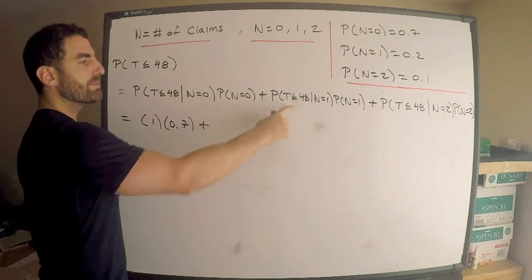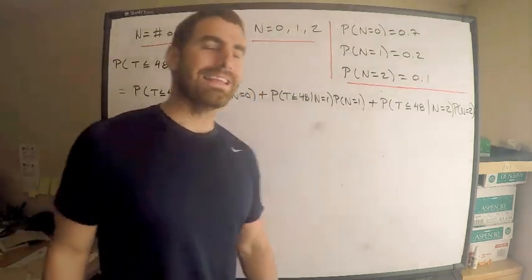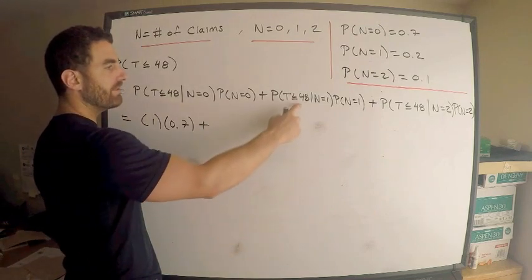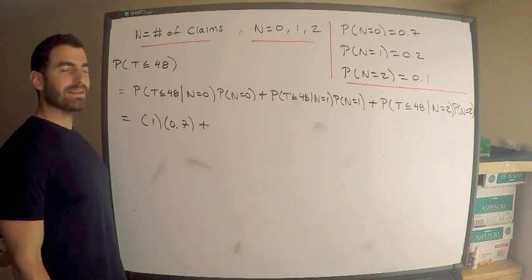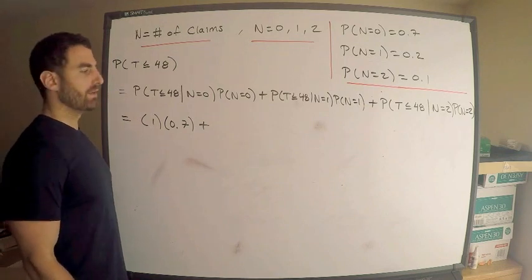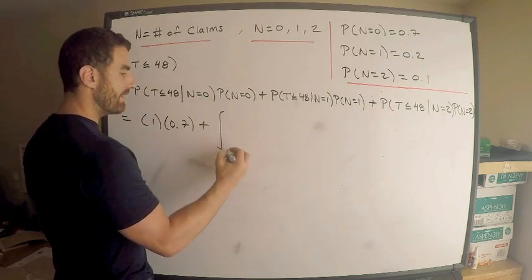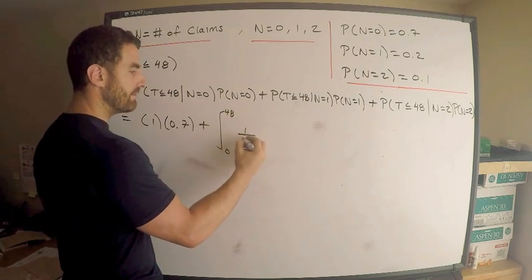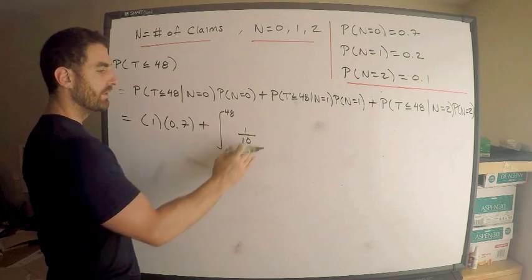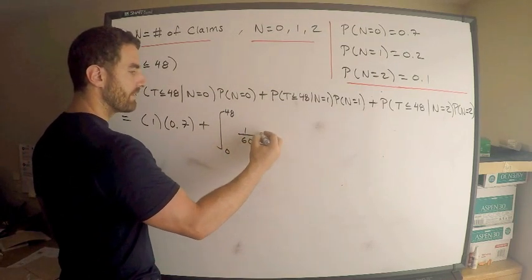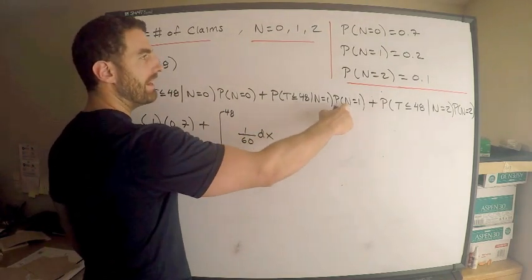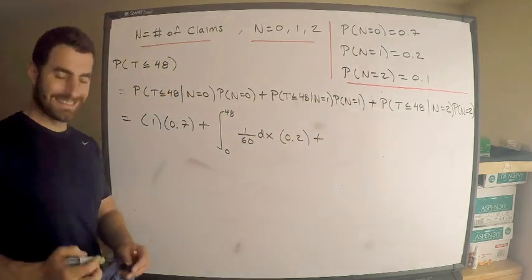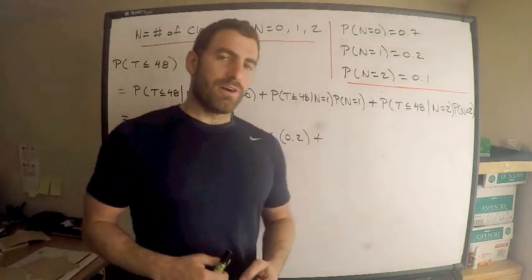now what's the probability that T is less than or equal to 48 and N is one? If N is one, the probability T is less than or equal to 48, this is the probability that X is less than or equal to 48. Probability that X is less than or equal to 48 is the integral from 0 to 48, X is uniformly distributed over the interval from 0 to 60 dx times the probability N is one that's given as 0.2